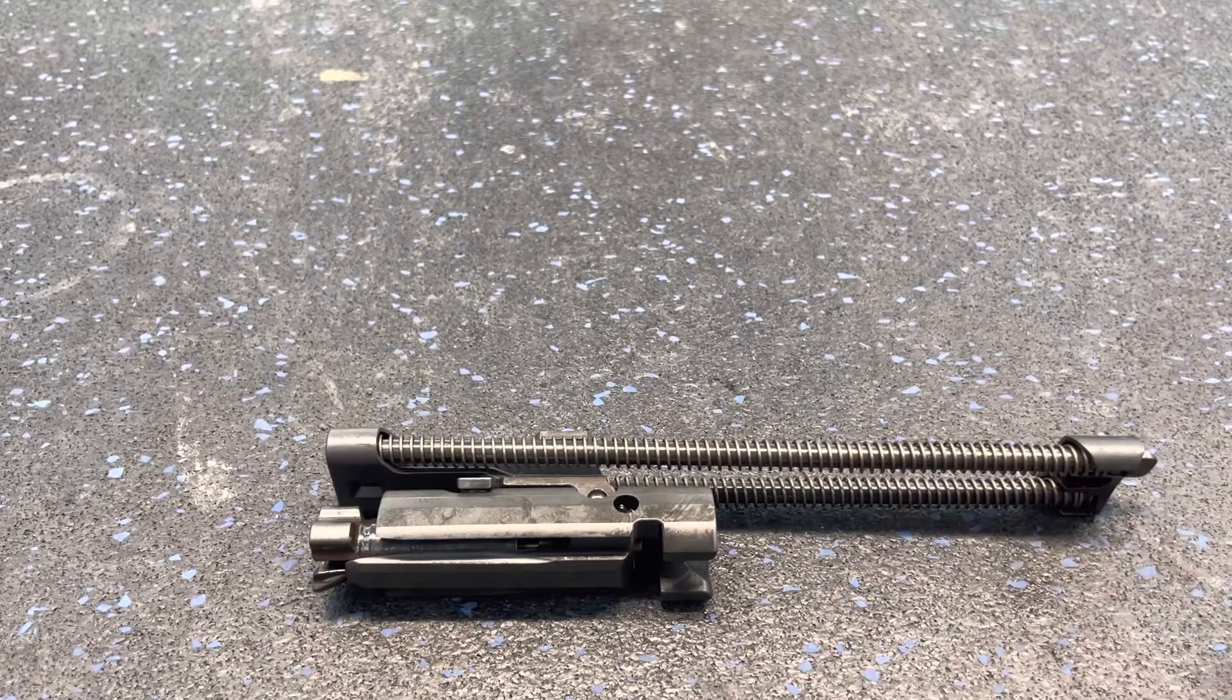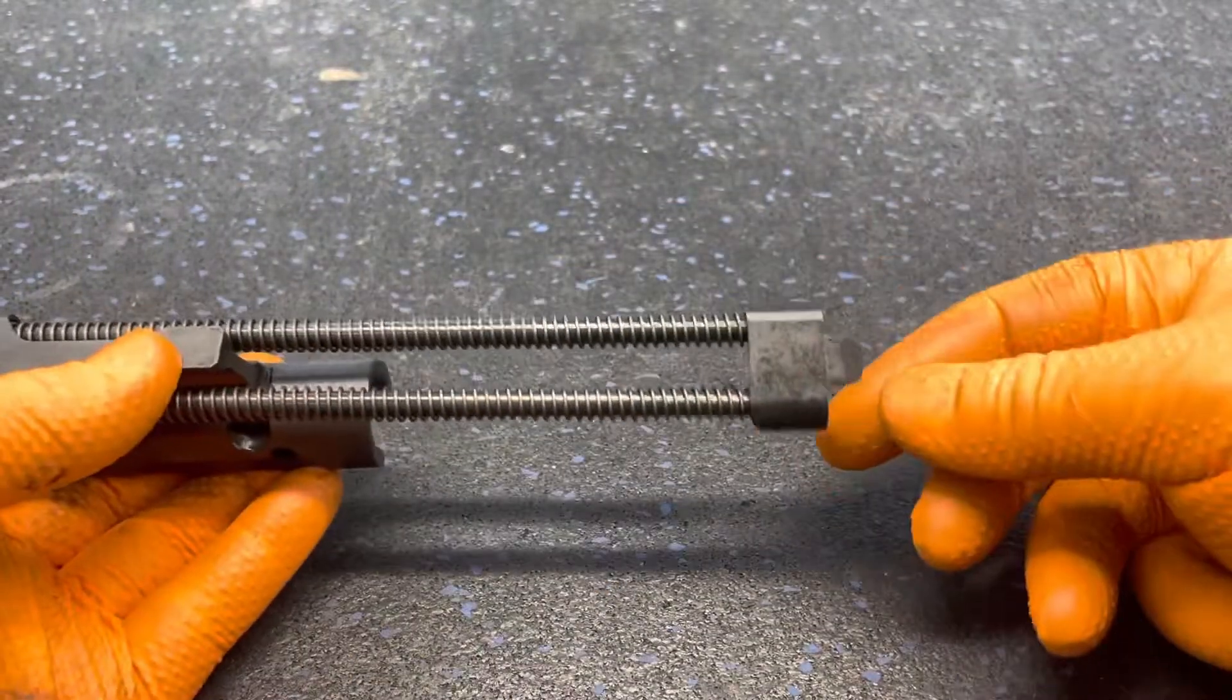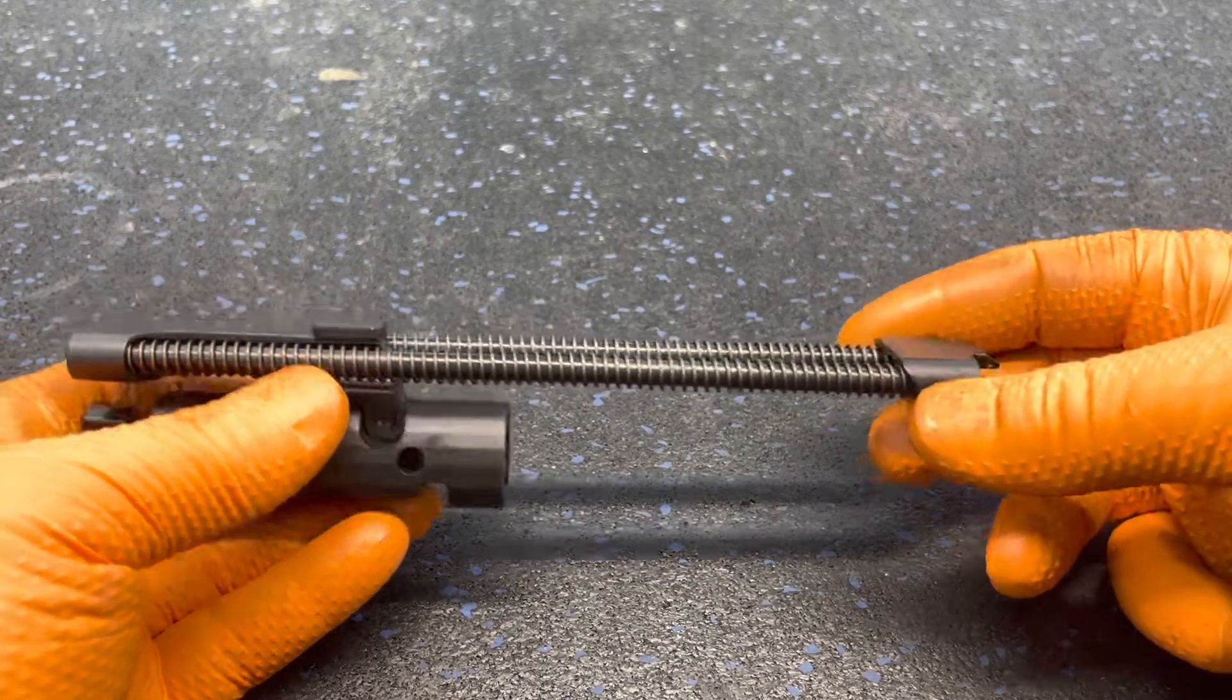The biggest distinctions from the previous ones are obviously the ball pivot for the op rod and the tab that fits in the lower receiver on the latest generation MPXs.